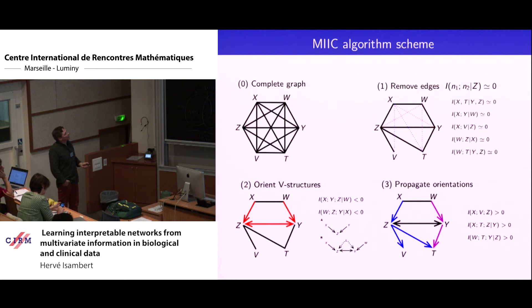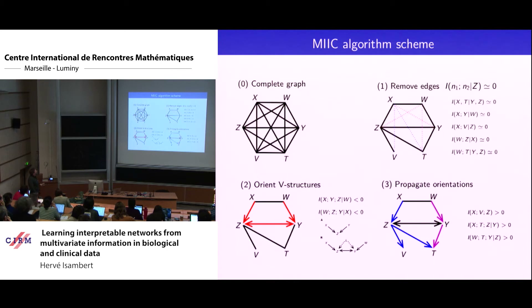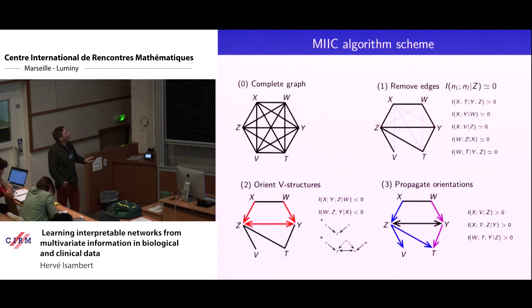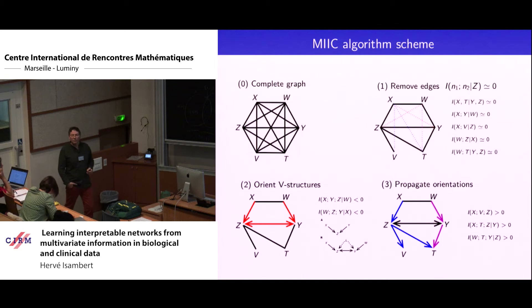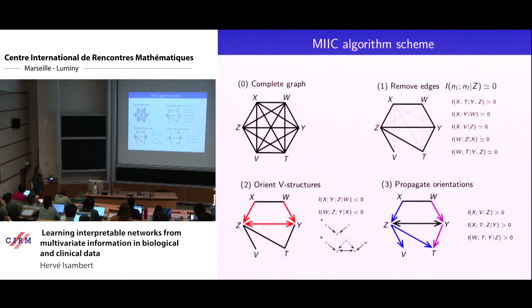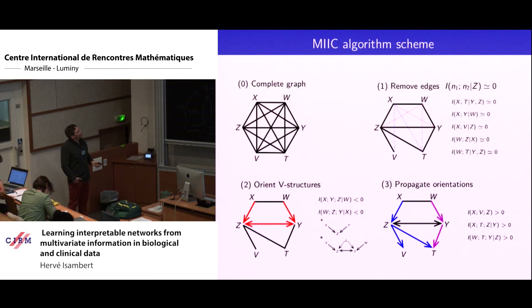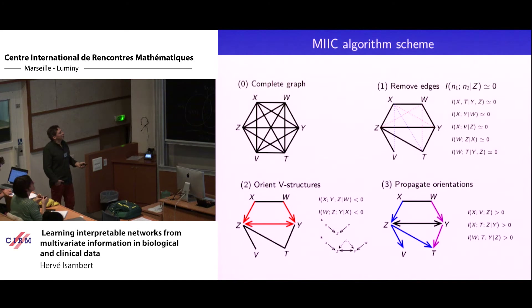So, to sum up our approach: it's a constraint-based approach. You start from a complete graph and prune edges based on conditional independencies found in a robust way. Then you orient them: the orientations are based on the sign of this three-point information. Unlike two-point conditional information that is always positive, three-point information can be positive or negative. When negative, it means there's really no contribution — you've found a v-structure. When positive, you can propagate further down the v-structure orientation.